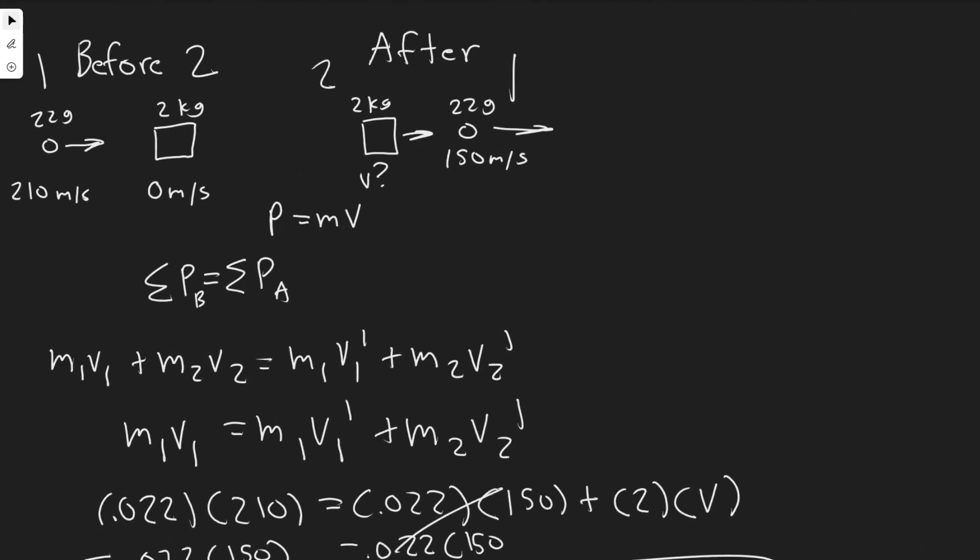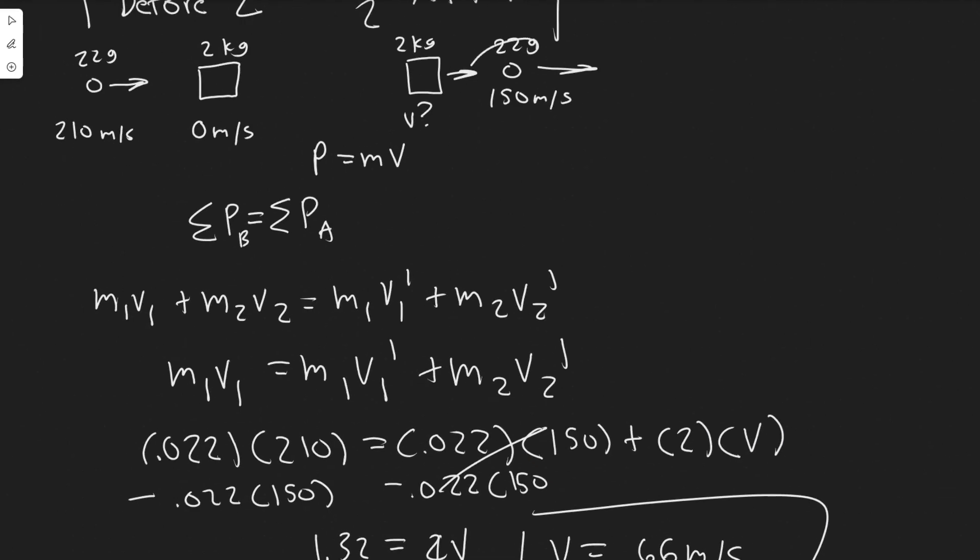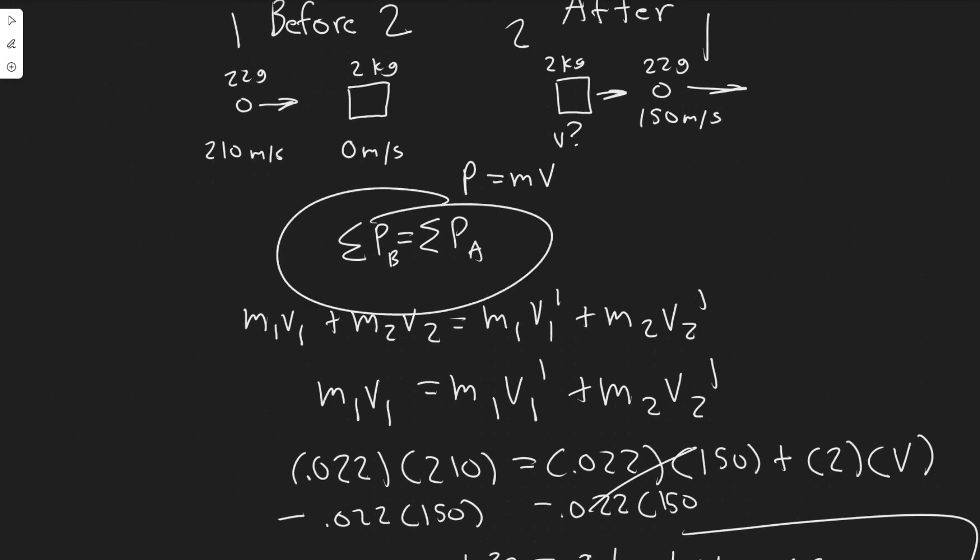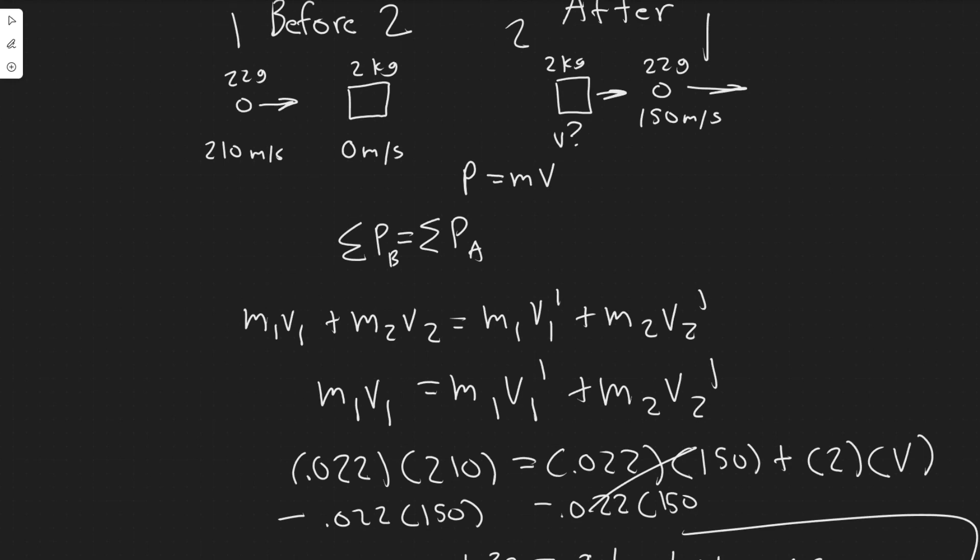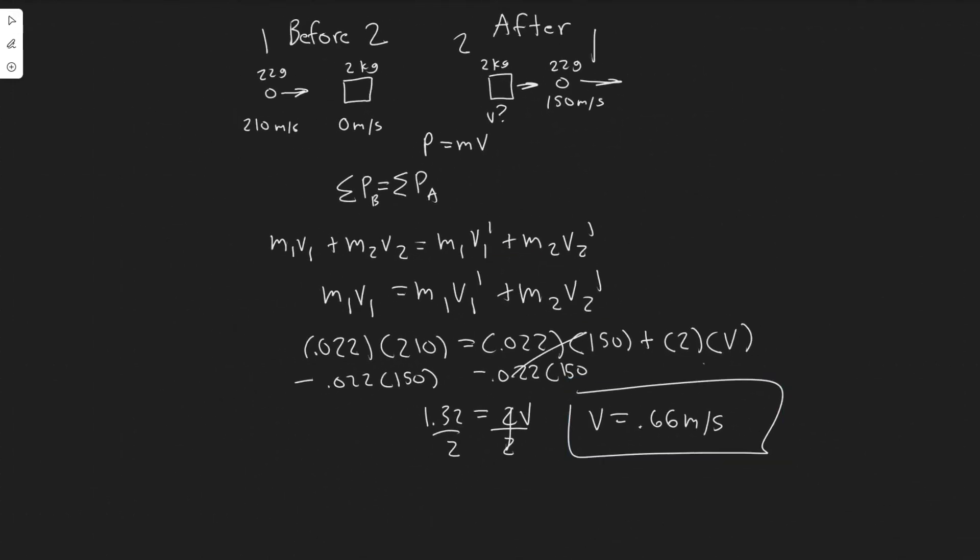But yeah, so just keep in mind, it's not really moving that fast, obviously, because it just got hit by the bullet. It's not like it's going to travel the same speed. But yeah, so all we did was use the law of conservation of momentum. We looked at before and after, and then just plugged in our value. So pretty simple problem. And yeah, so this right here is going to be your answer. And hopefully you found this useful.